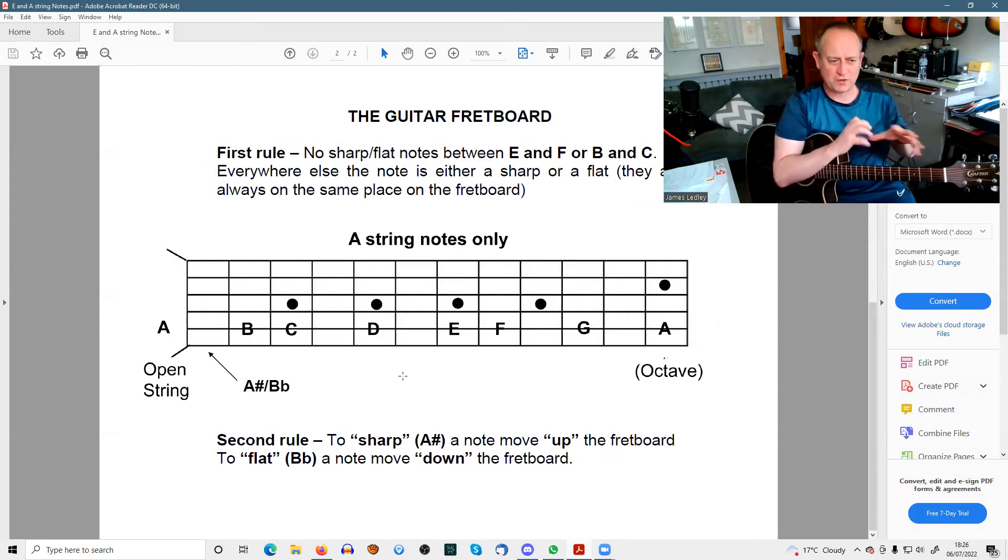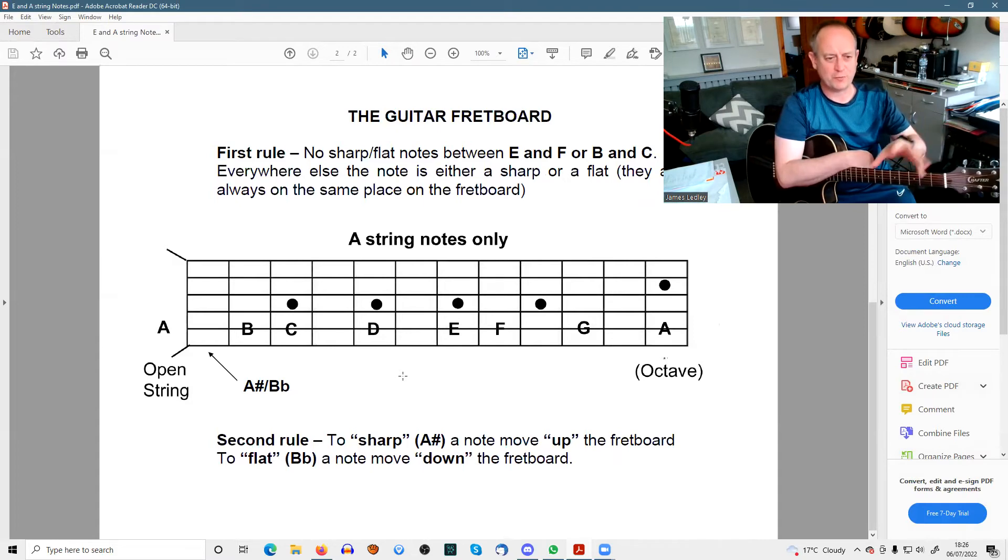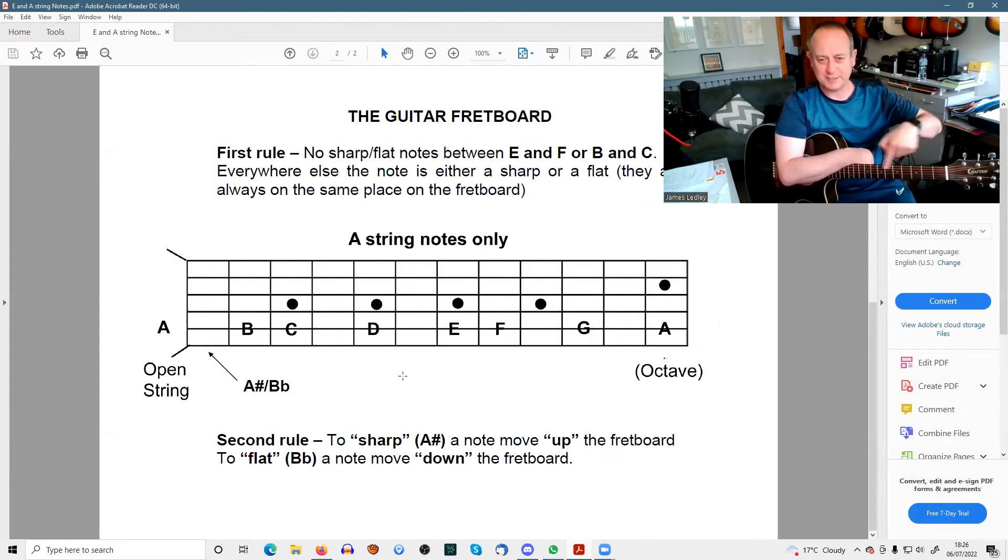It doesn't look like it on the fretboard, but the guitar is very well organized. It's different to piano, where you can say, I know that the black keys are either sharp or flat, and the white ones aren't. We don't have that advantage on the guitar because you don't have any black and white keys. You just have a bunch of frets and some dot markers and a few strings.